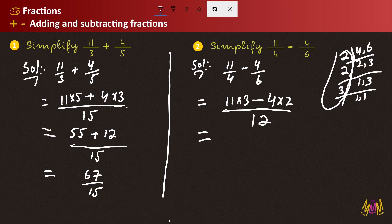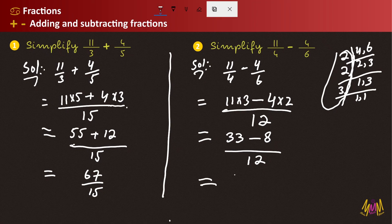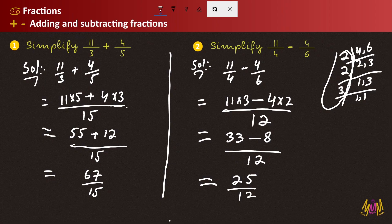We multiply 11 by 3 to get 33, divided by 12, minus 4 multiplied by 2 to get 8, divided by 12. So we have 33 minus 8 over 12, which gives 25 divided by 12. Since 25 and 12 share no common factor, 25 divided by 12 is the simplified final answer.